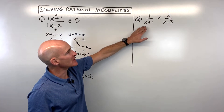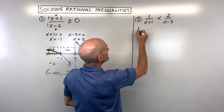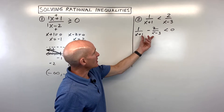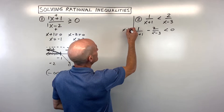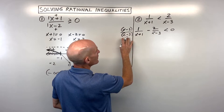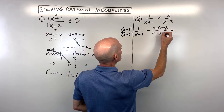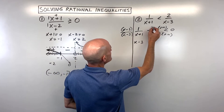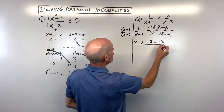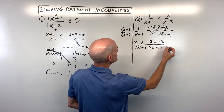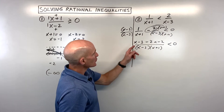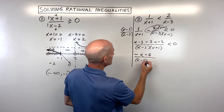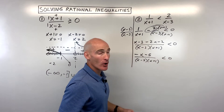Let's take a look at example number two. We're going to subtract this quantity to get everything on one side and set it to zero. Then we're going to get a common denominator and combine into one fraction. I'm going to multiply by x minus three over x minus three, and this one by x plus one over x plus one. We get x minus three, then distribute the negative two to get negative two x minus two, all over the common denominator of x minus three times x plus one, all less than zero. Combining like terms gives us negative x minus five all over x minus three times x plus one, less than zero.